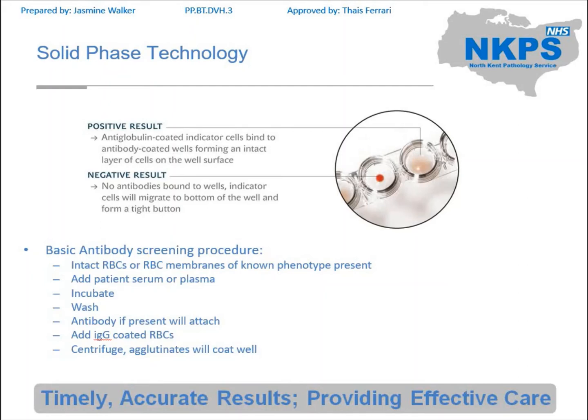The other thing to note is that this is a technique that cannot be performed manually. It's also a technique where you can have a lot of reagent-based issues. Because you've got a whole plate full of samples it's very easy to get spillages, which can give contaminated results. If you were to have a haemolysed sample it would look like a positive result. However, it is a very sensitive technology, so it will pick up antibodies like the Kidd antibodies that some other technologies aren't as good at picking up.